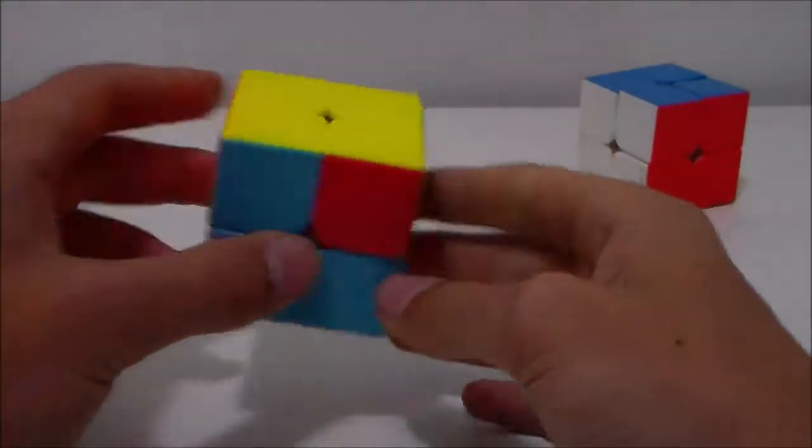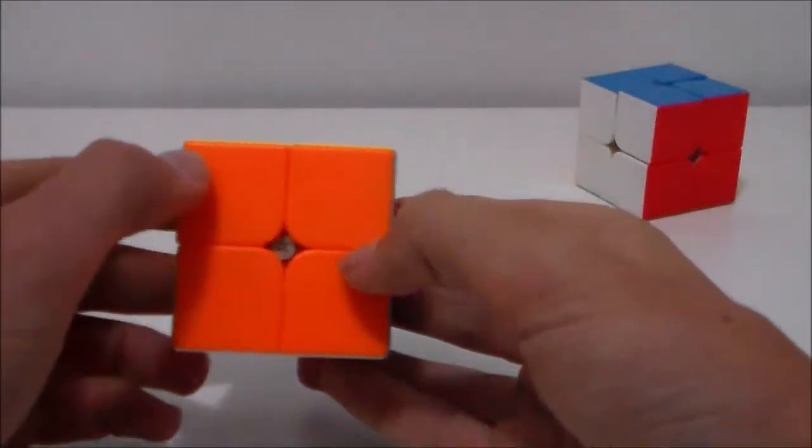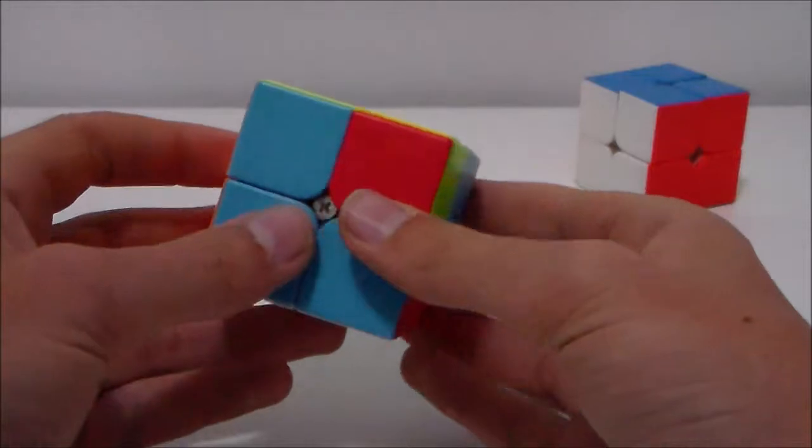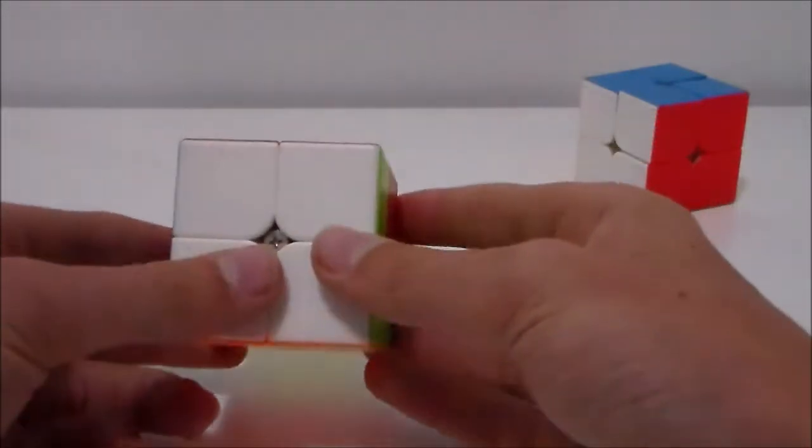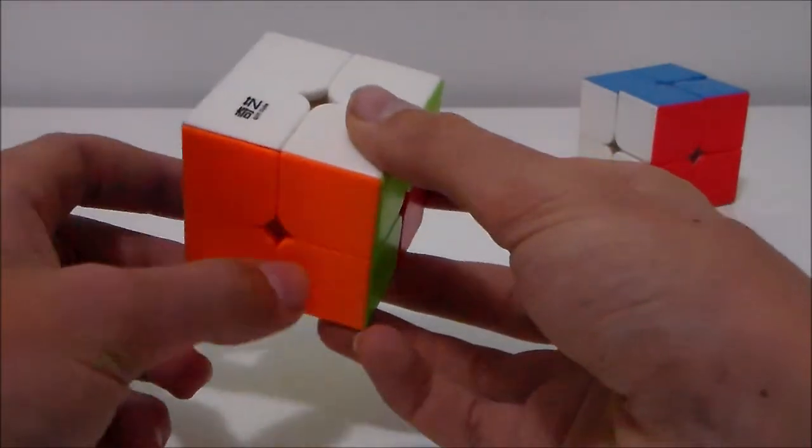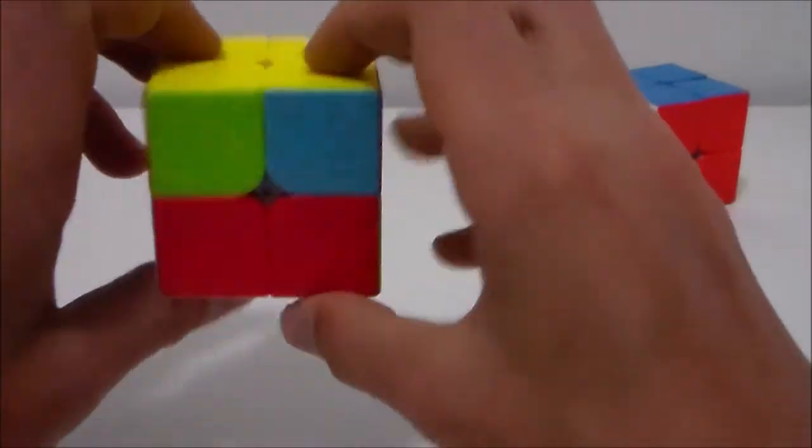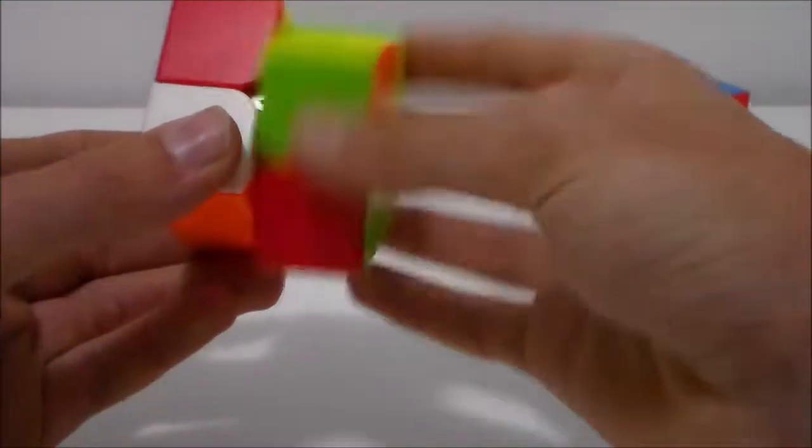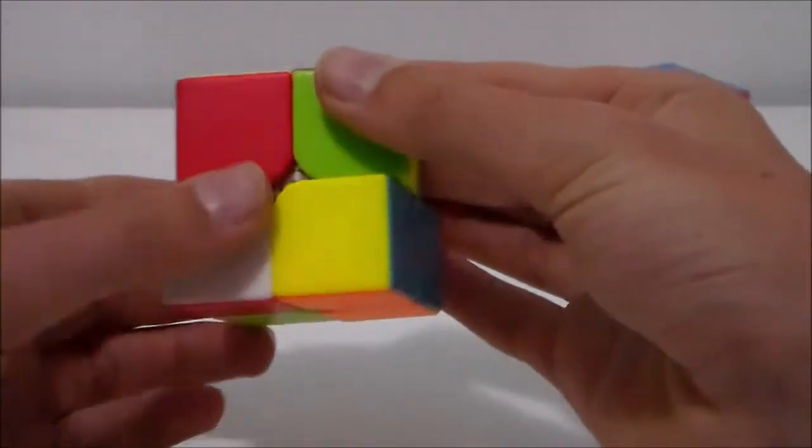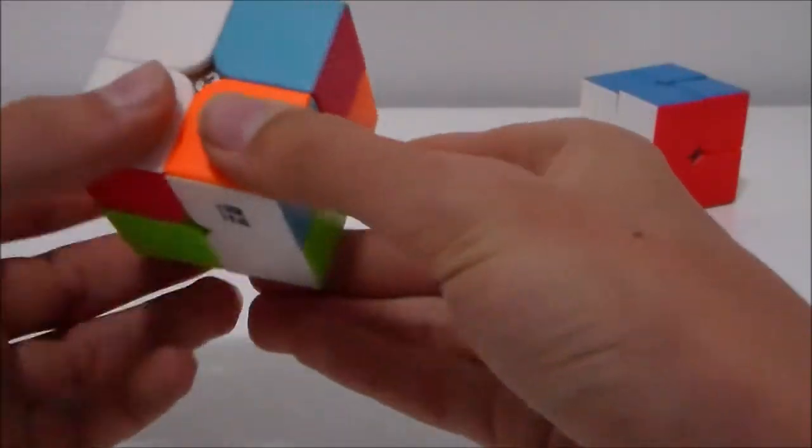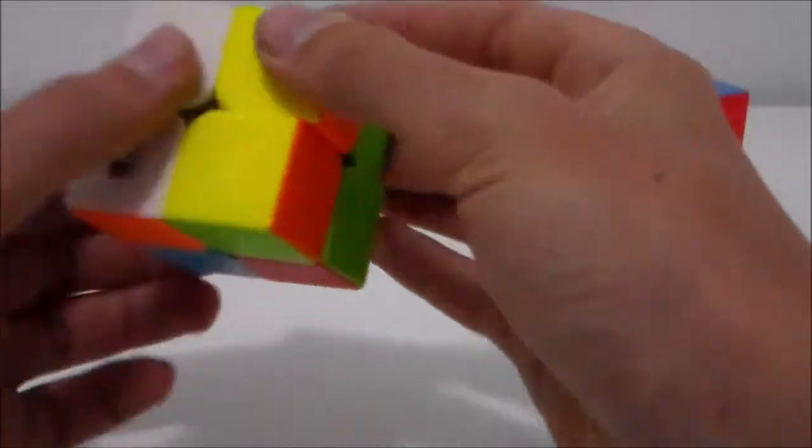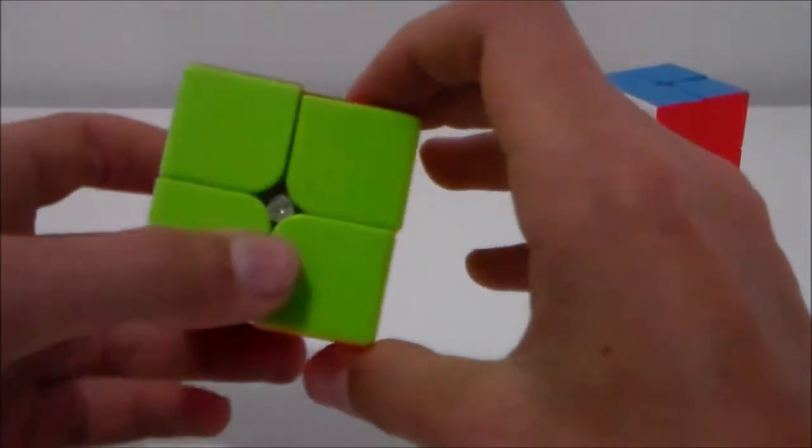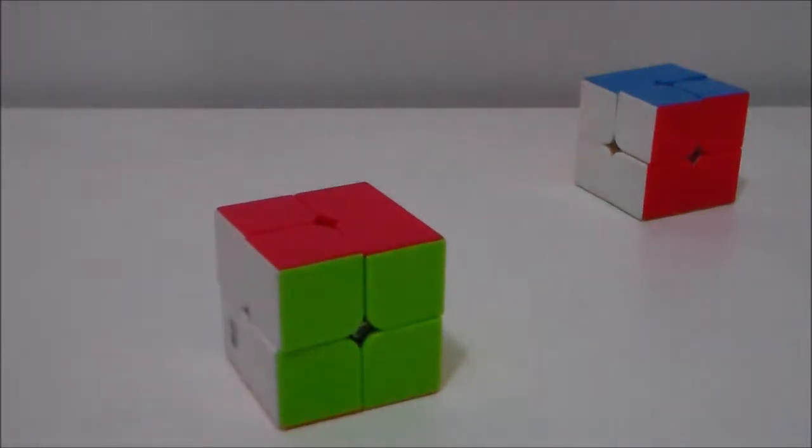The first case you can get for this last layer is where there are two pieces that are connected. So these are in the correct orientation. So what you will want to do is have white facing the front and these two pieces on the bottom with yellow on the back. So you will want to perform this algorithm. R prime U R prime D2 R U prime R prime D2 R2, and then the cube will be one or two moves away from being solved. And there you go, there's the cube solved.